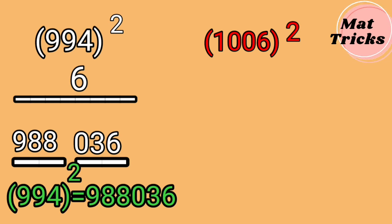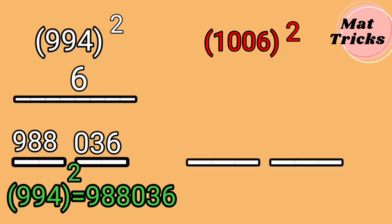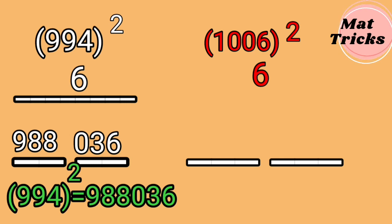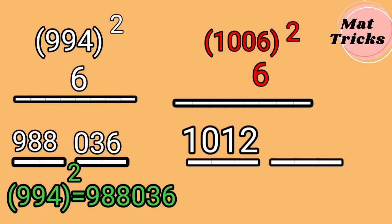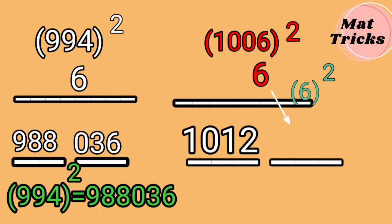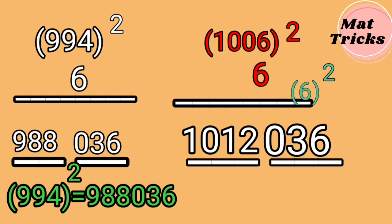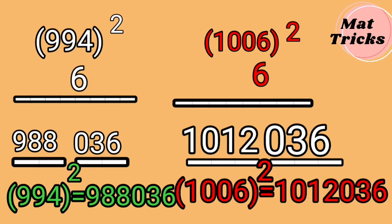Now let us move to the other example, 1006 whole square. Write 2 blanks. The difference between 1006 and 1000 is 6, so write 6 under 1006. Since 1006 is more than 1000, we have to add: 1006 plus 6 is 1012. Write 1012 in the first blank. The next operation is square: 6 square is 36, and we have to write 036 — 3 digits — in the second blank. Therefore, 1006 whole square is 1,012,036.